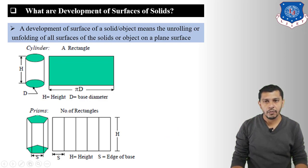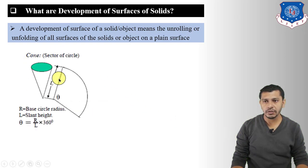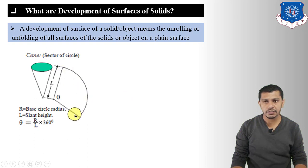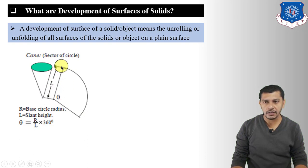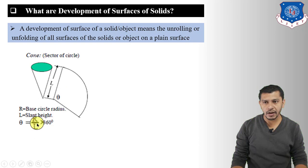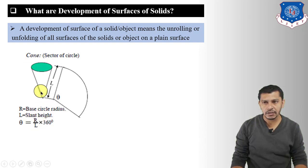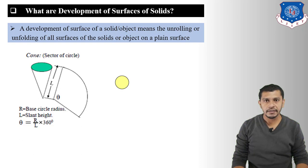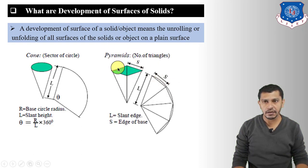Now let us see the development of a cone. The development of the cone is a sector of a circle with radius equal to the length of the generator of the cone, and the angle of the sector theta equals (R / L) × 360°, where R is the radius of the base circle and L is the length of the generator.